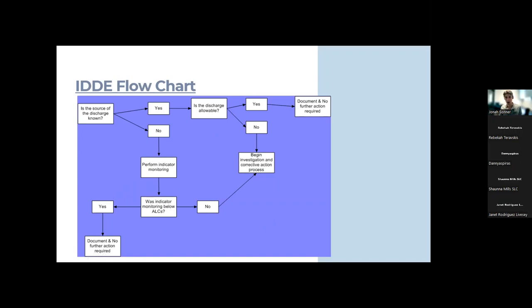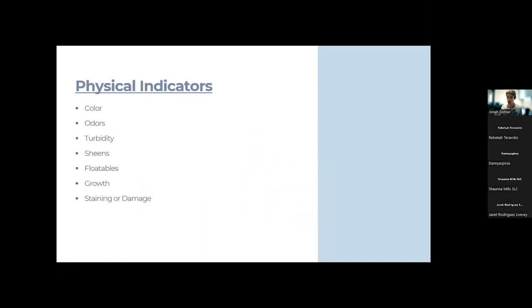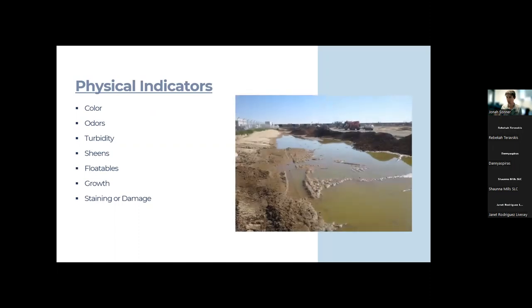There are seven physical indicators to evaluate right away. First: color. If the water is green or any unusual color — not just organic debris tannin coloration — that's a strong indicator of a non-allowable discharge. Second: odors. If it smells like sewage, rancid, or otherwise unusual as you look into a manhole, that indicates something other than clean stormwater.